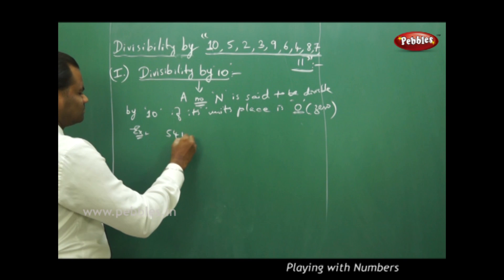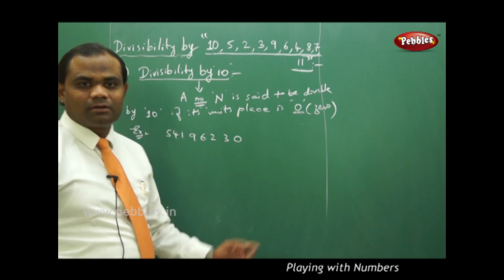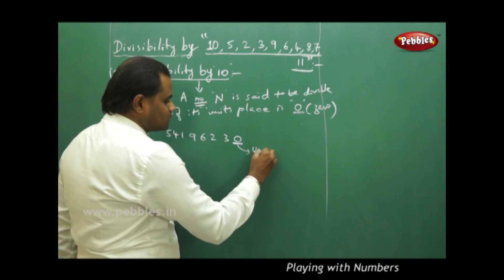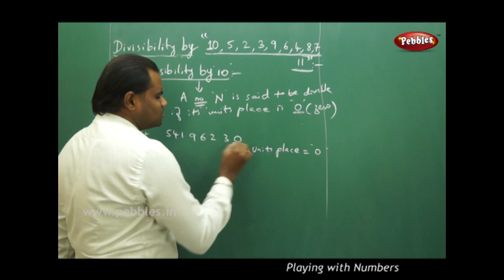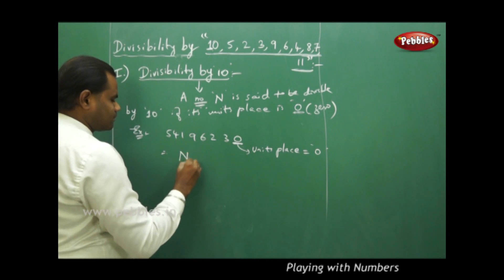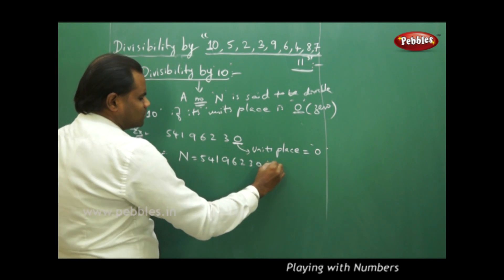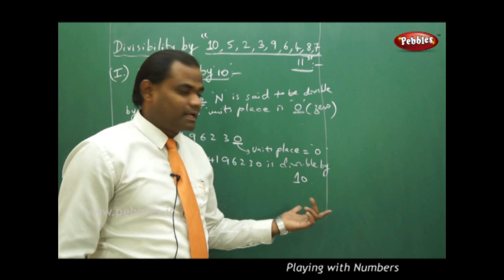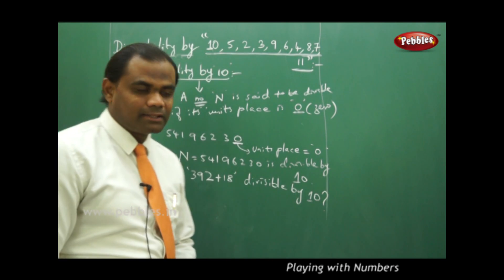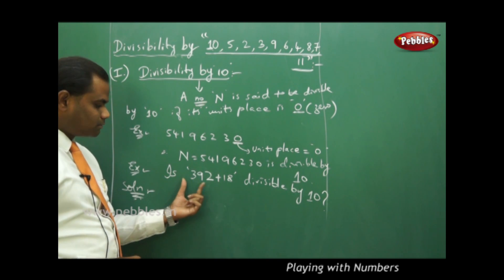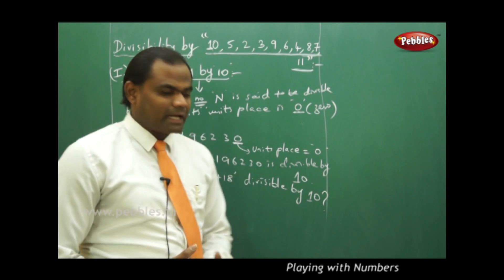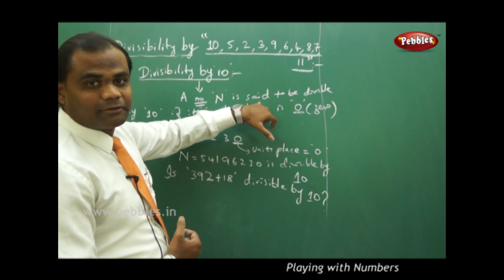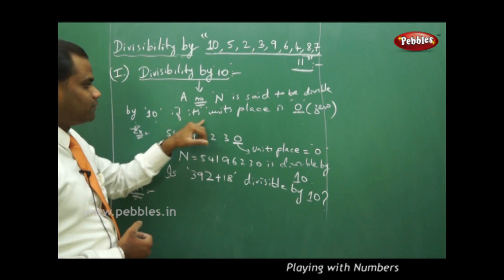For example, take the number 54,196,230. I want to know if this number is divisible by 10. I immediately check the unit's place, which is 0. Therefore, n = 54,196,230 is directly divisible by 10. As another example, let's check whether the sum 392 + 18 is divisible by 10. By the rule, a number n is divisible by 10 if its unit's place is 0.